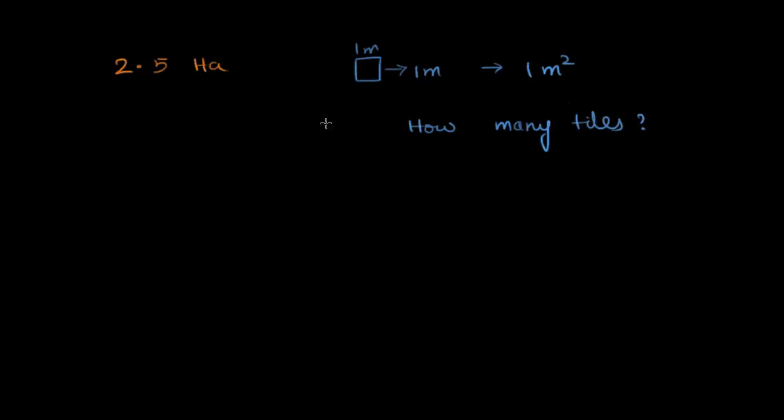Then what I will do here is first want to know how many meters square are there in this. And that's it, I'm done because that's the exact amount of tiles that I need. So to do that, I'm going to take 2.5 hectares. And I know that one hectare is 10,000 meters squared. So I have to take 2.5 into 10,000 meters squared.